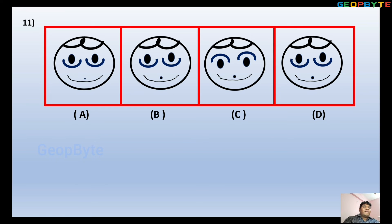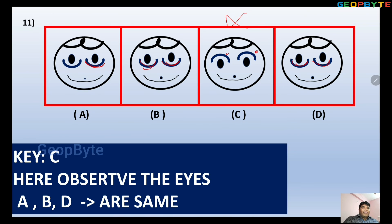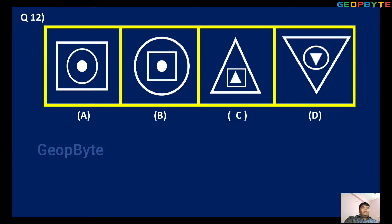The eleventh question — observe very different question. Observe the eyes and eyebrows. In options A, B, D, the eyes are pointing downward here — down, down. But in option C, the eyes are pointing upward. So option C is different from the others. A, B, D are having the same pattern, but C is different.